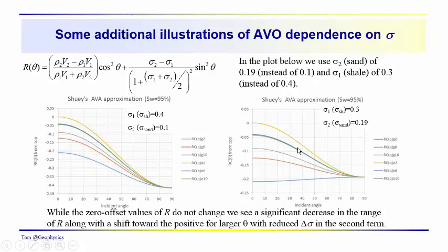As we get into the deeper gas sand, 10,000 feet and 6,000 feet and 2,000 feet, we see almost a reversal in the predicted amplitude variation with offset for this range of Poisson's ratios. So the Poisson's ratio influence is fairly significant.